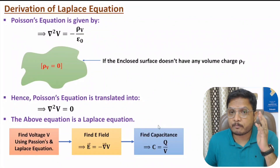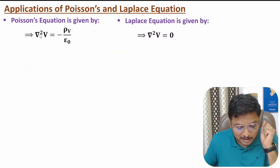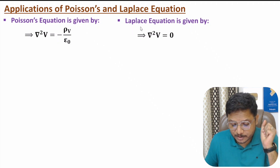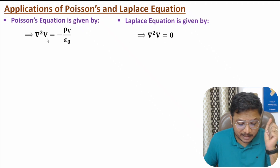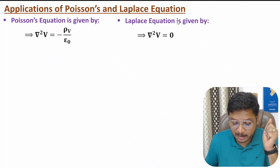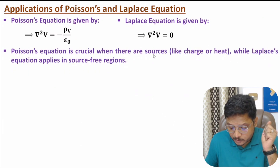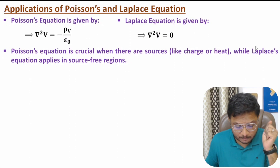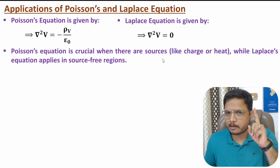Now I'll explain applications of Poisson's and Laplace equations. Poisson's equation — del squared V equals minus rho_v by epsilon naught — applies to a surface having volume charge within it. Laplace's equation — del squared V equals zero — applies to a closed surface where there is no volume charge. Poisson's equation is crucial when there are sources like charge or heat, while Laplace's equation is applied to source-free regions.